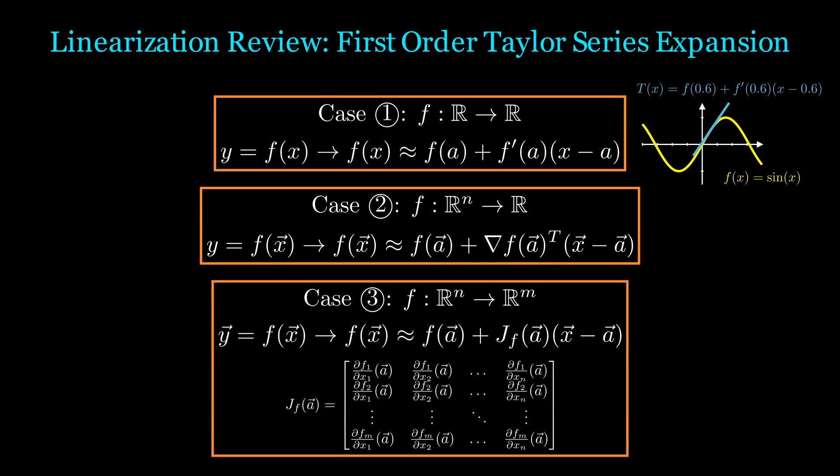Case 3 is the most general case. f maps from Rn to Rm, and this is often the case we use. Here we need to compute the Jacobian of f, which consists of every possible first-order derivative combination.